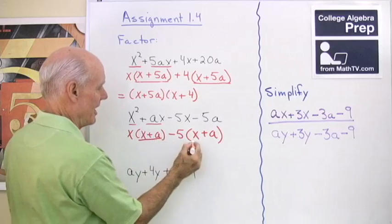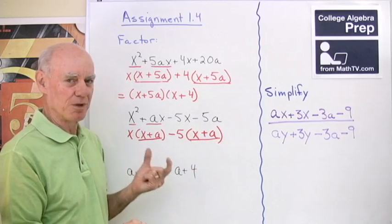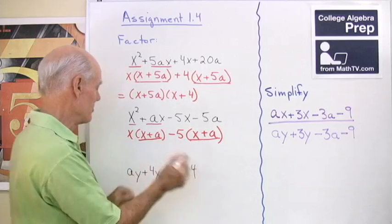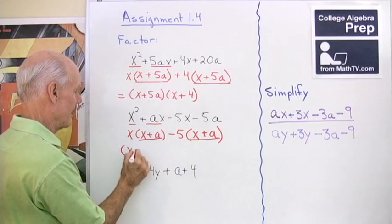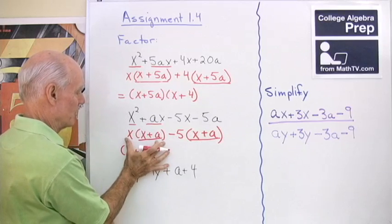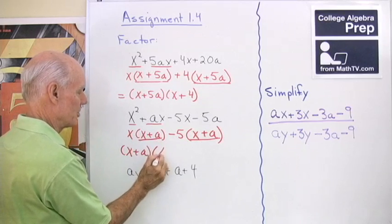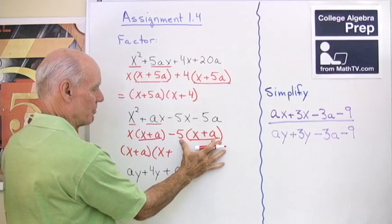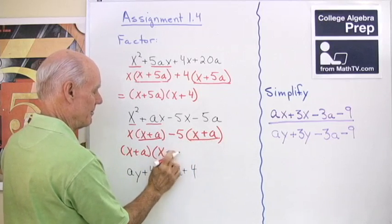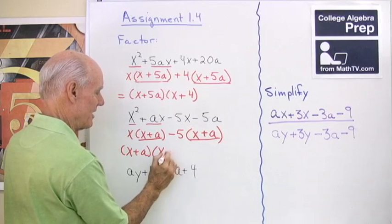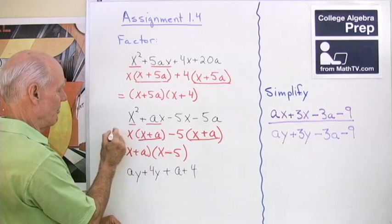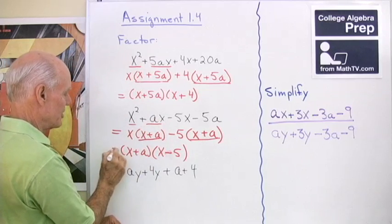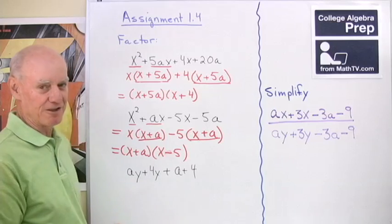And now I see that I have that single number, x plus a, common to this term and this term, so I factor it outside. x plus a times what's left when I factor it from this term, which is x. And what's left when I factor it from this term, oops, almost made a mistake, minus 5. Okay, so this factors to this, which factors to this. So there's my factor form.